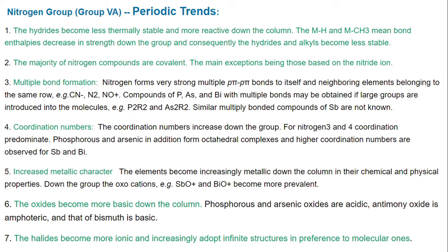The oxo-cations become more prevalent going down the group. Oxides become more basic down the group. The phosphorus and arsenic oxides are acidic. Antimony oxide is amphoteric and that of bismuth is basic. The halides become more ionic and increasingly adopt infinite structures in preference to molecular ones.